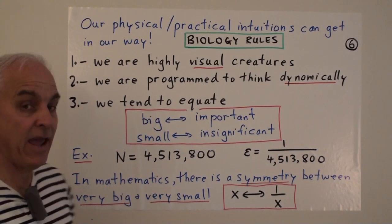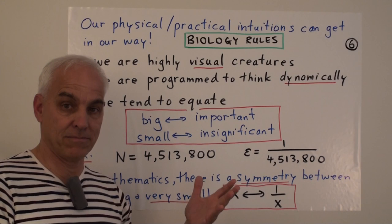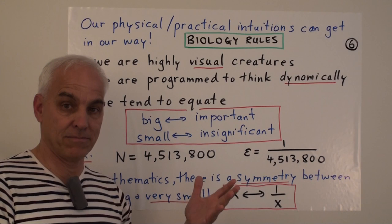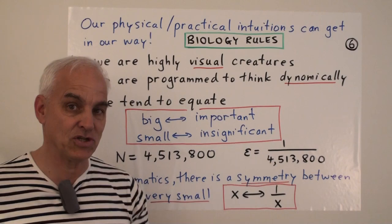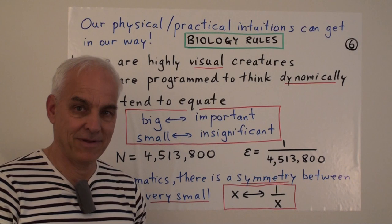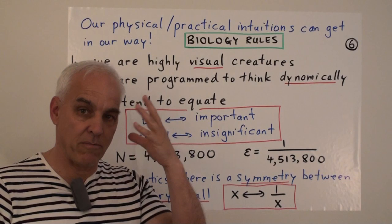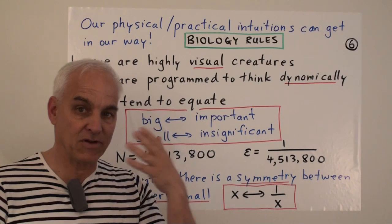Our physical and practical intuitions can get in our way. So here are some of the things that makes us what we are. Part of the reason why we are so effective. And why our understanding has gone so far. But also, perhaps, explain some of the limits and boundaries and challenges that we might face. So first of all, we are highly visual creatures. Our eyes are fabulous things. And we have a large part of our brain that's oriented towards understanding the visual information we're getting from our eyes.